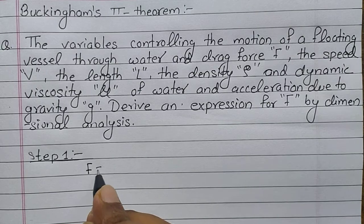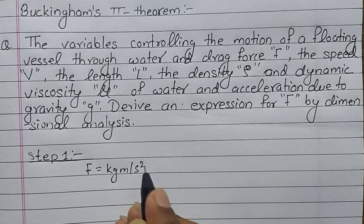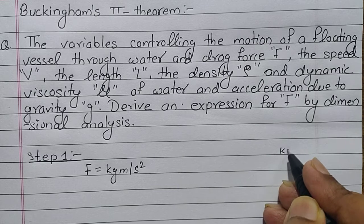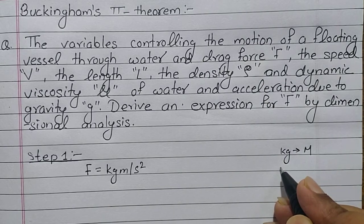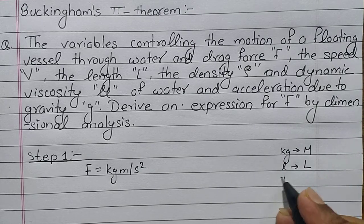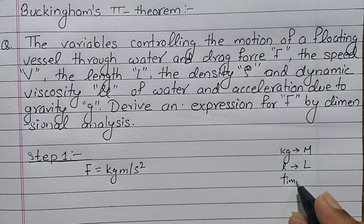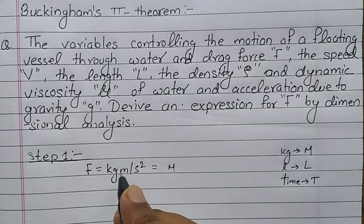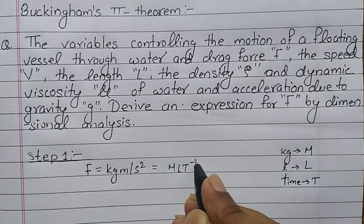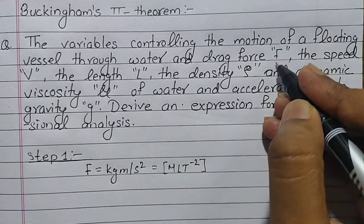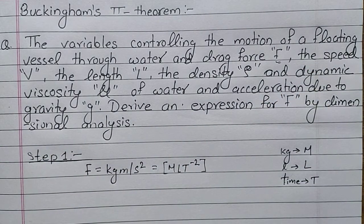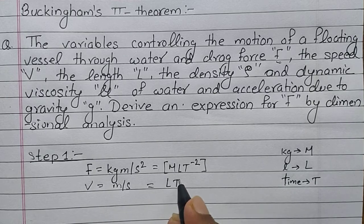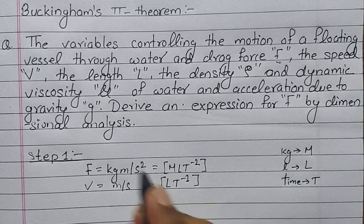We know that the unit of force is kg·m/s², and we have 3 fundamental dimensional units: M for mass, L for length, and T for time. So force F is written as MLT⁻². The second variable is speed, with unit m/s, so it will be written as LT⁻¹.